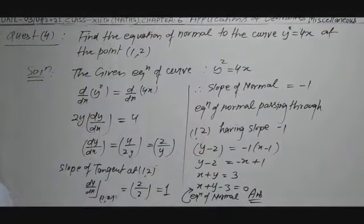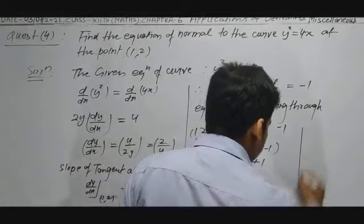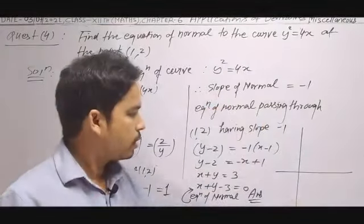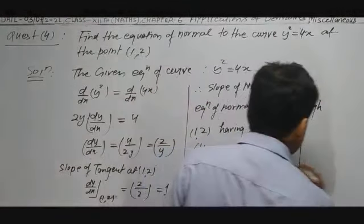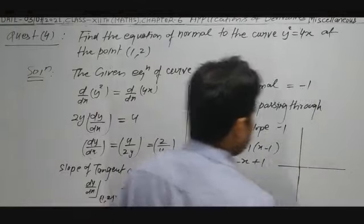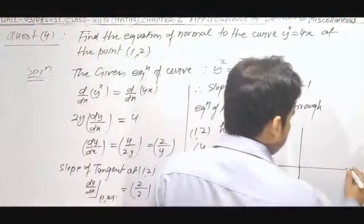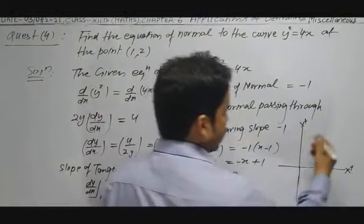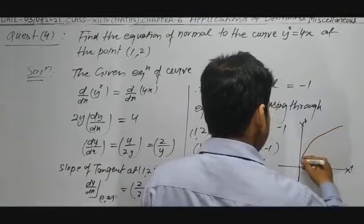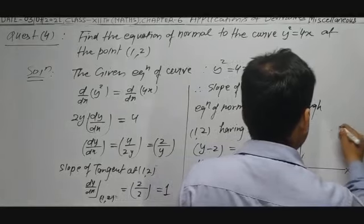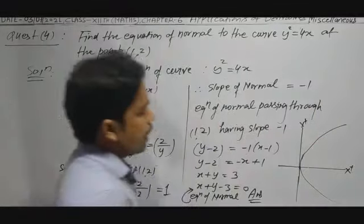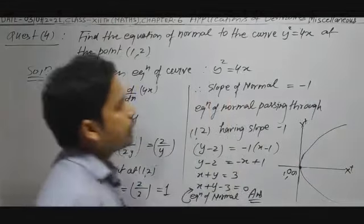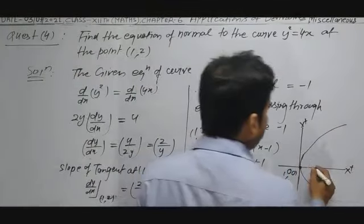Now drawing the graph: y² = 4x is the standard equation of a right-hand parabola. The parabola passes through the origin, with vertex coordinates (0, 0). The focus coordinate — equating to 4a = 1, so a = 1 — gives foci at (1, 0). The point (1, 2) lies on the parabola.